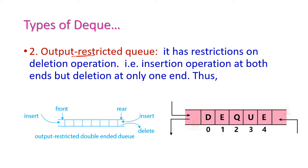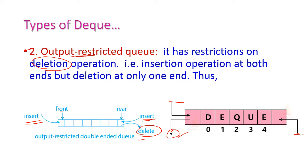The second one is output restricted DEQ. Here the restriction is only on the deletion operation. That means insertion can be performed at both ends — both front side and rear side — but deletion can be done at only one end. So insertion we can do at both ends, but deletion can be performed on any one end of the DEQ.